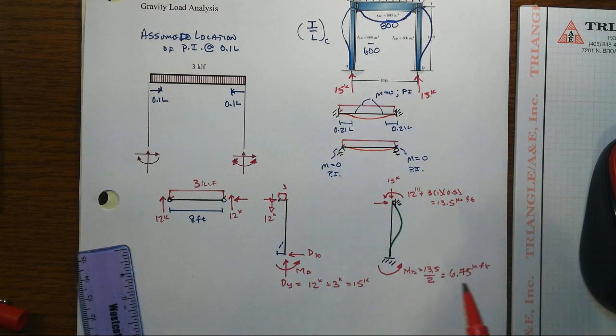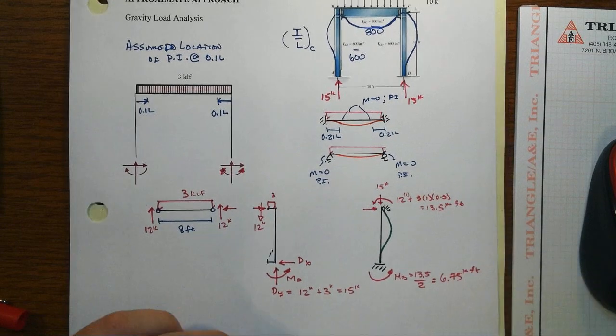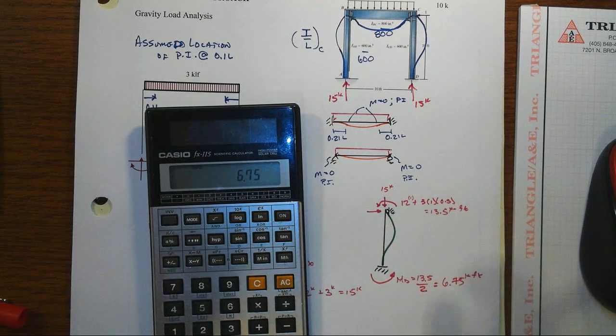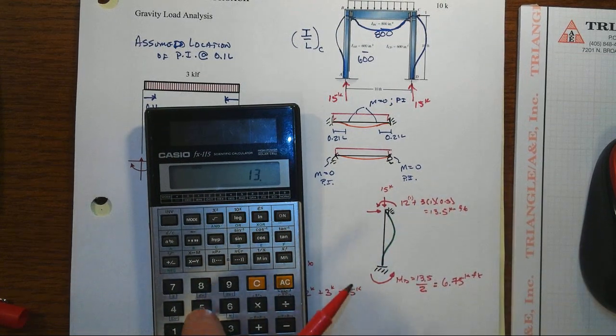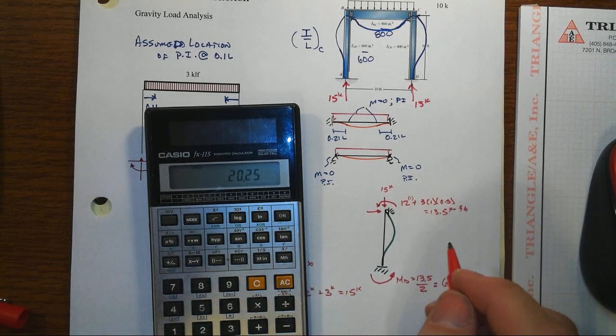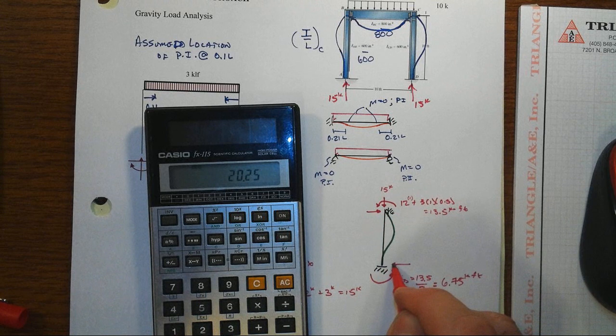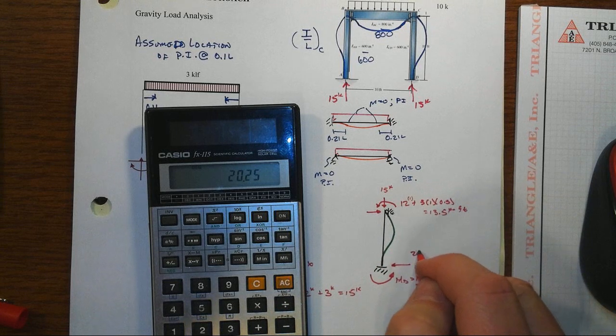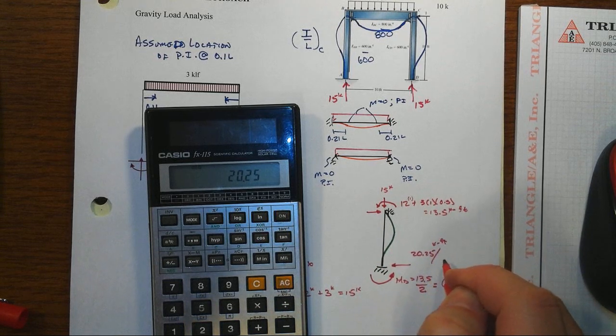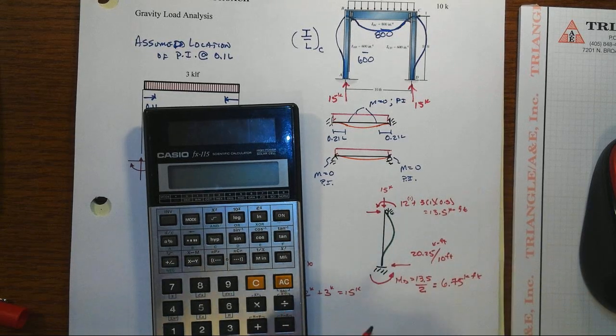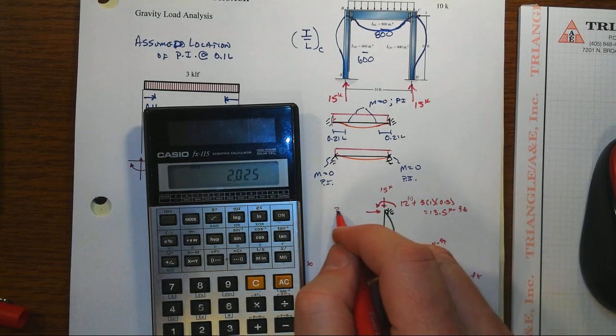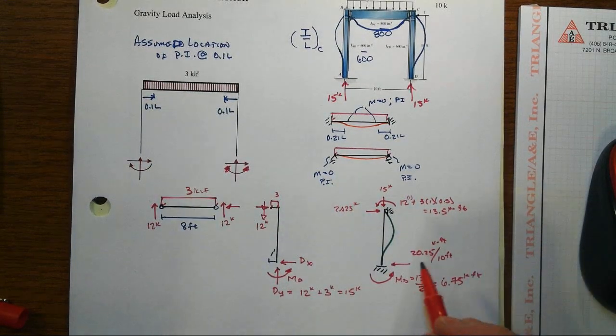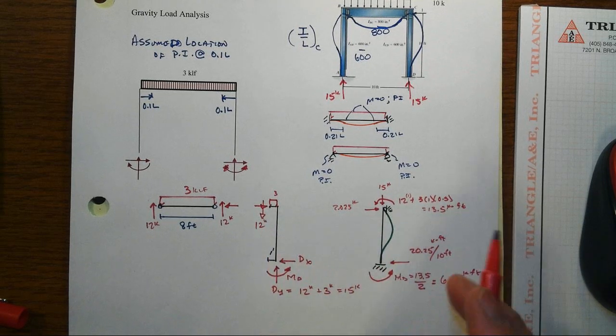From there then we can do the rest of the work here. Now that we know that, with a total moment trying to rotate this thing, it's going to be 20.25. So this set of lateral forces has to be a force couple that resists that. And so that'll be 20.25 kip feet divided by 10 feet or 2.025 kips. So that actually allows us then to have a reasonably complete kind of model here.